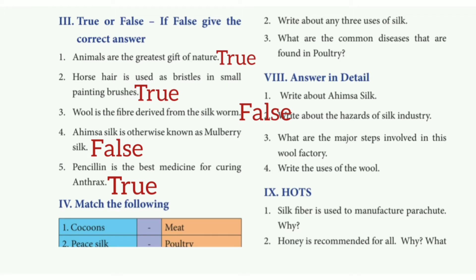True or false. First one: animals are the greatest gift of nature — the answer is true. Second one: horse hair is used as bristles and small painting brushes — the answer is true. Third one: wool is the fiber obtained from the silkworm — the answer is false.